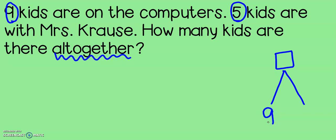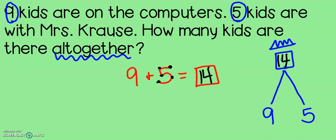There are nine on the computer and five with Mrs. Krause. So, I'm looking for my total in this problem. Let's write a quick equation: nine plus five equals something because we're looking for that total. I'm going to use touch points, but you can also use counting up with your fingers: nine, ten, eleven, twelve, thirteen, fourteen. That means that there are fourteen total kids in this class or this group. Nine are on the computer and five are working with Mrs. Krause.